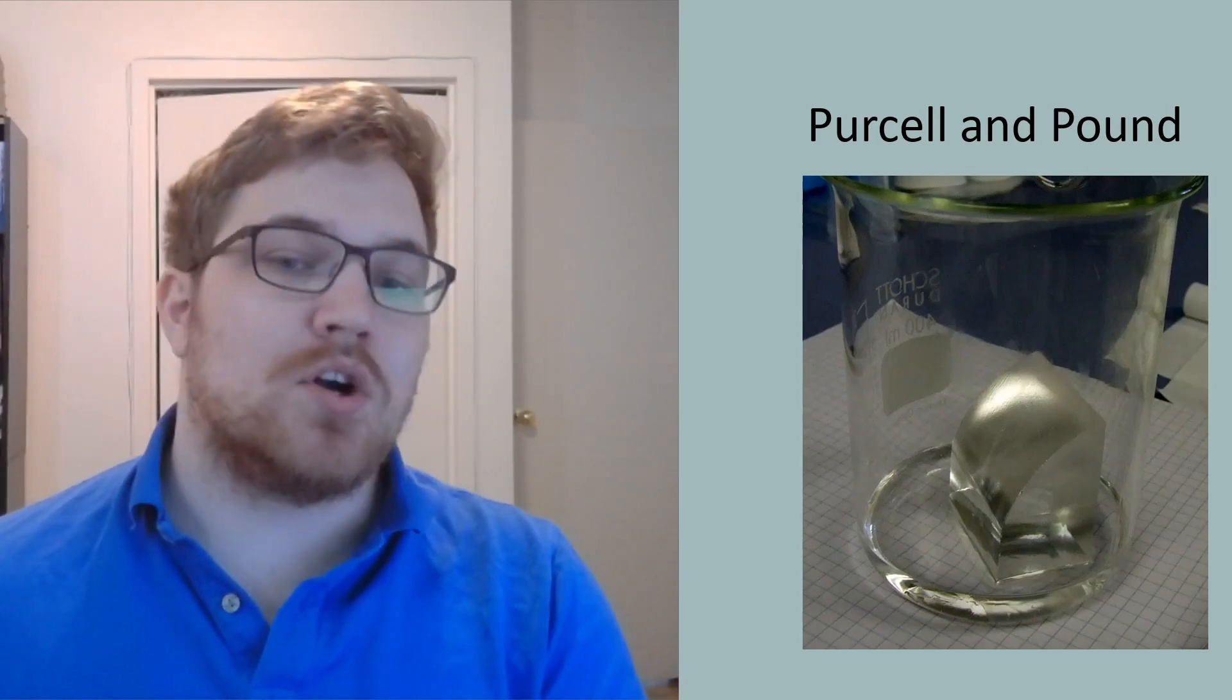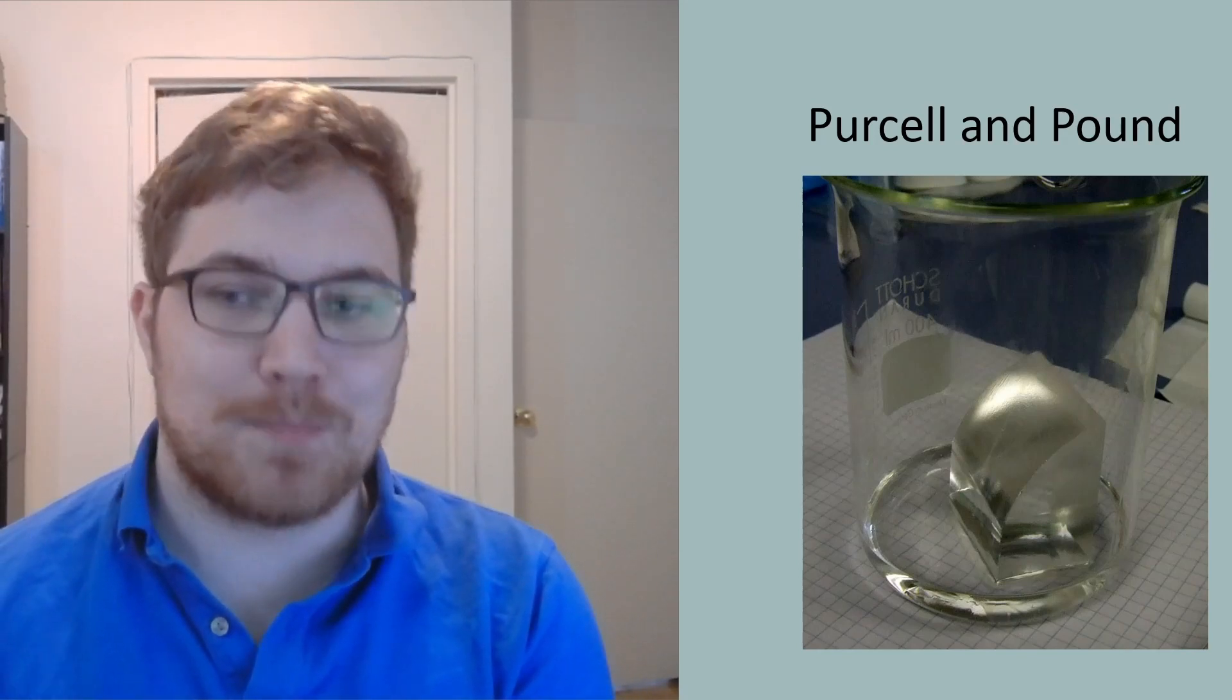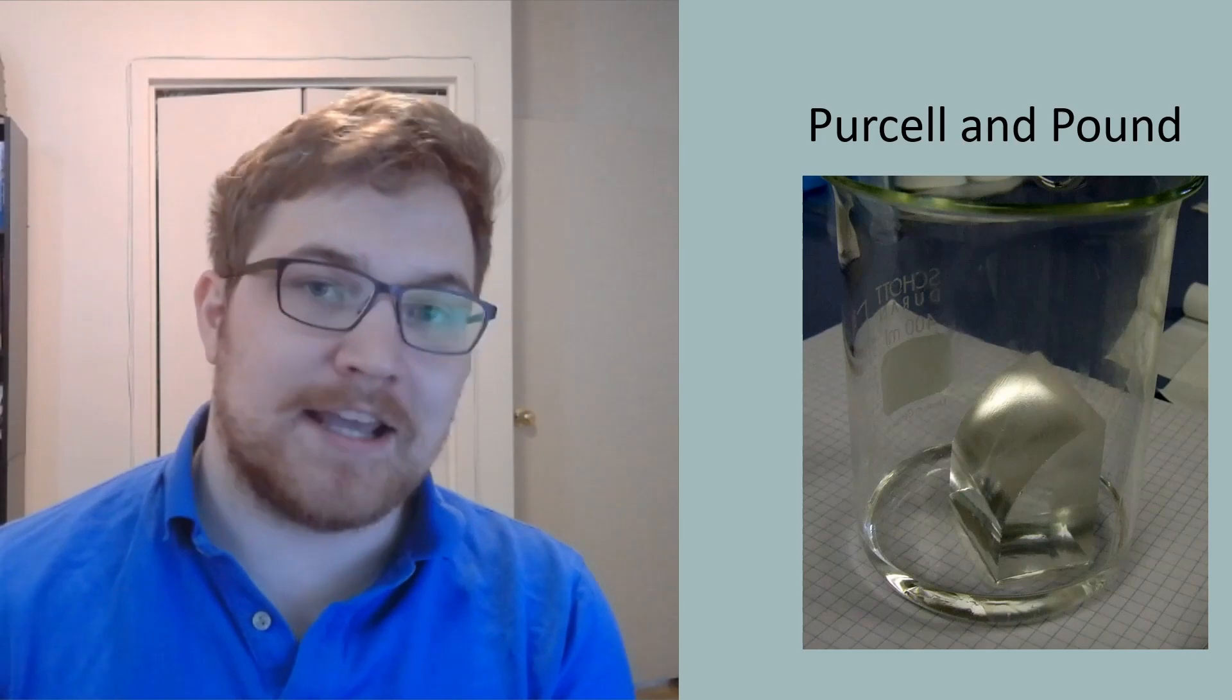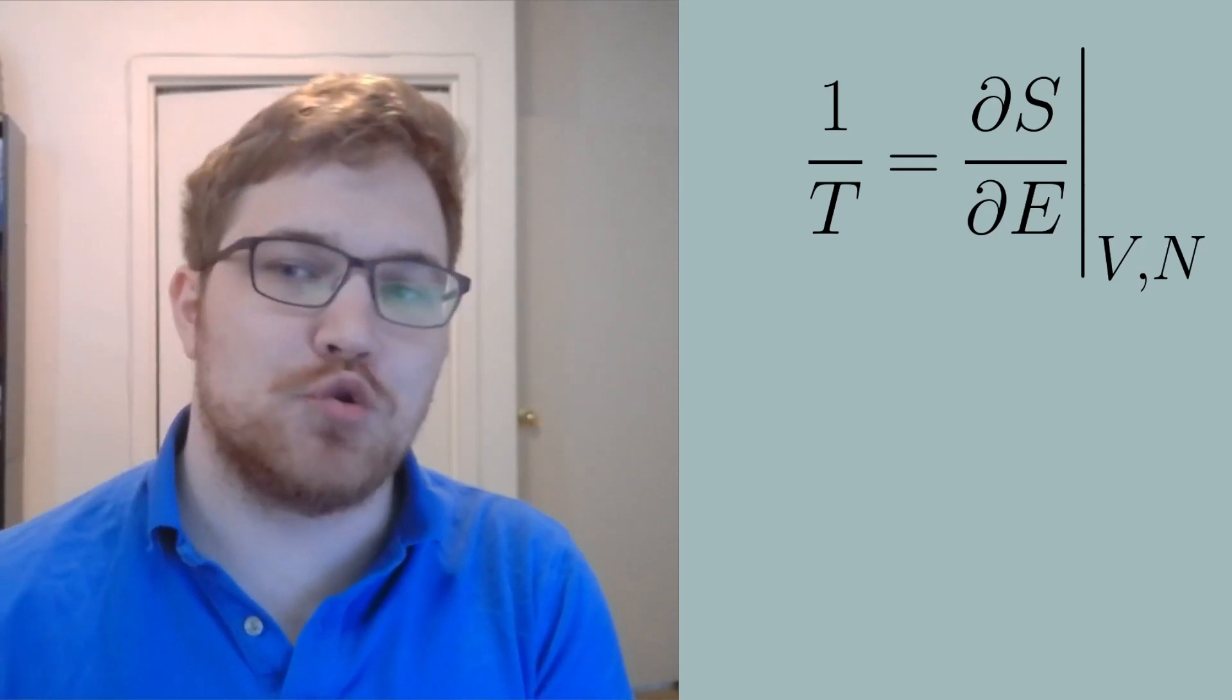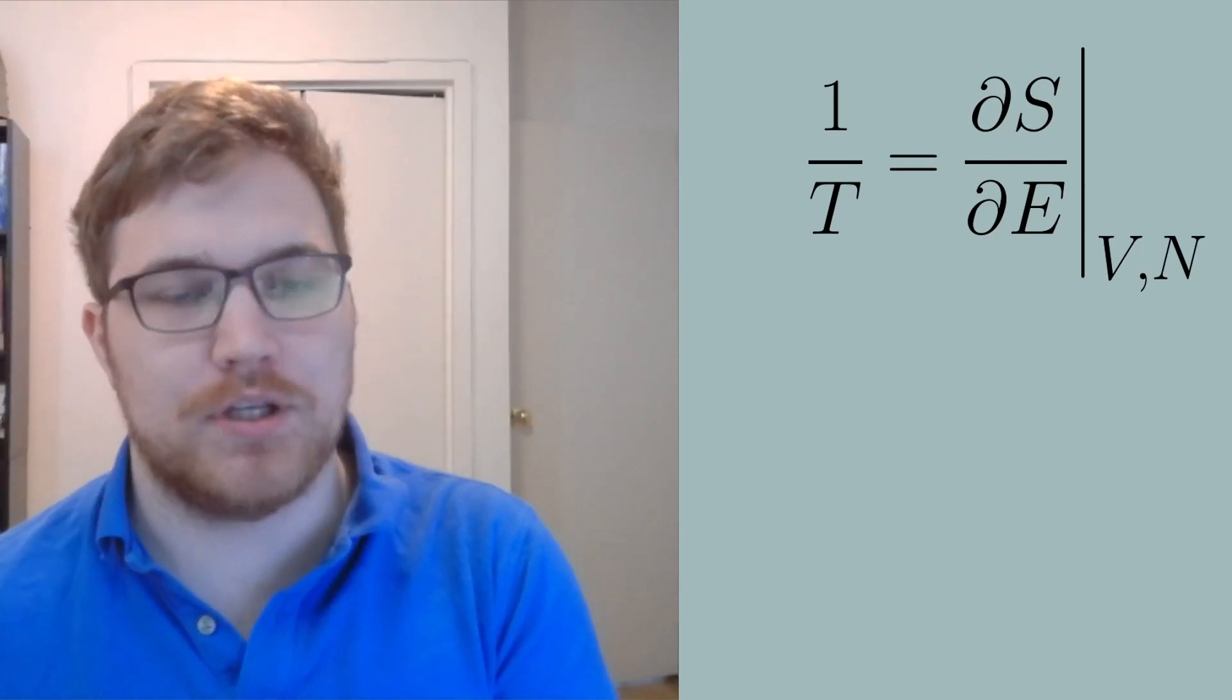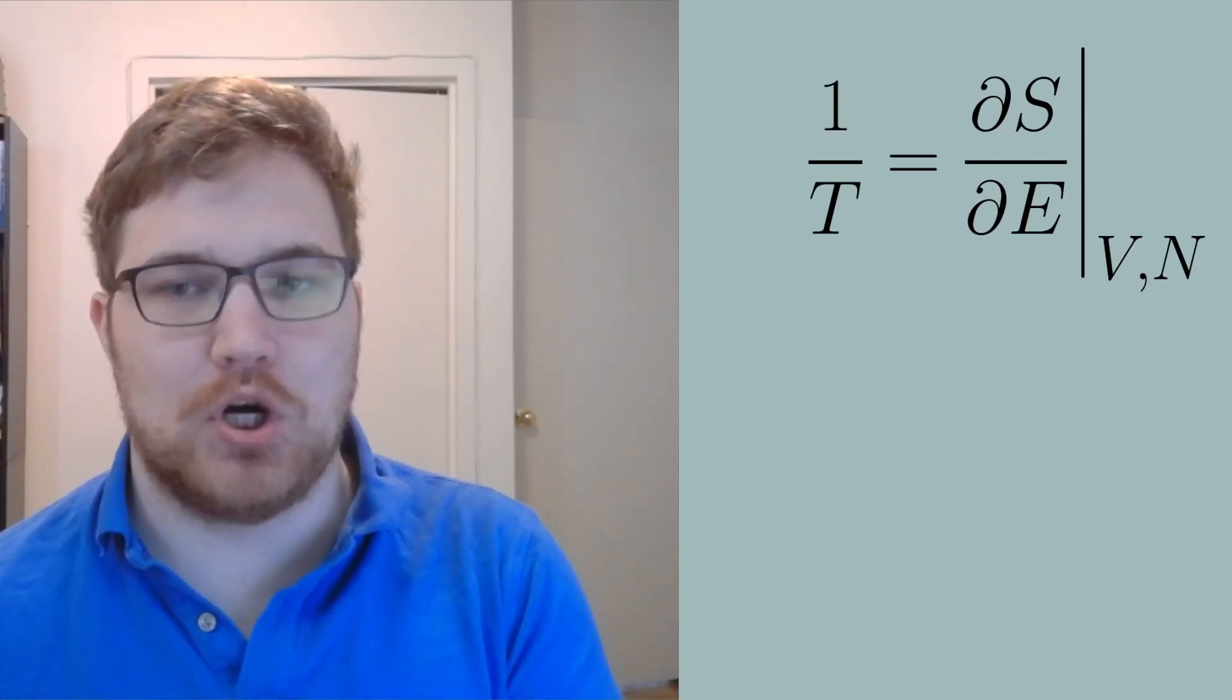Before we get started it's worthwhile to review briefly the definition of temperature in the two cases we expect for the entropy versus energy curve. We define 1/T as the partial derivative of the entropy with respect to the energy. We keep the volume and the number of participating bodies in the system constant.